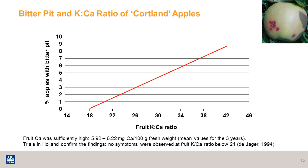Here's another set of data showing the impact of a high potassium-to-calcium ratio on bitter pit. A potassium-to-calcium ratio of 42 — which is very high — correlates to a higher percentage of apples with bitter pit. While a lower potassium-to-calcium ratio results in virtually no bitter pit.